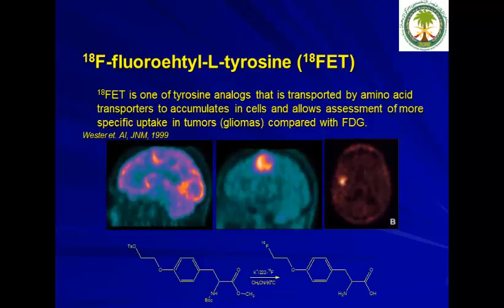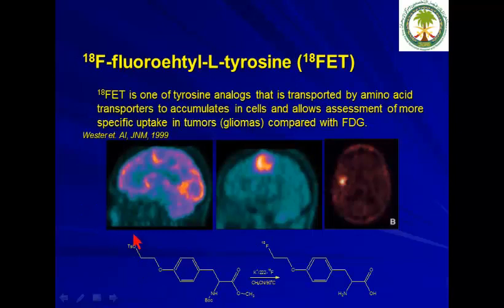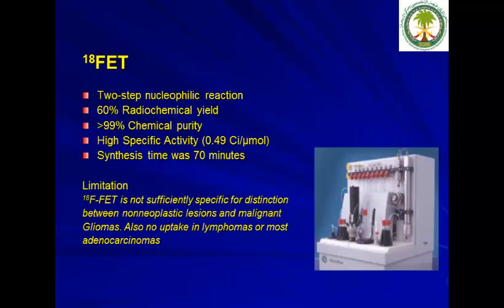Fluoroethyl L-tyrosine (F18-FET) is a tyrosine analog that accumulates in cells and allows assessment of more specific uptake in tumors, especially gliomas, in comparison with FDG. You can see a comparison of FDG and FET images in a glioma patient. The production method is simple — 60% radiochemical yield in less than 70 minutes. However, it is not sufficiently specific for distinguishing between non-neoplastic lesions and malignant gliomas.